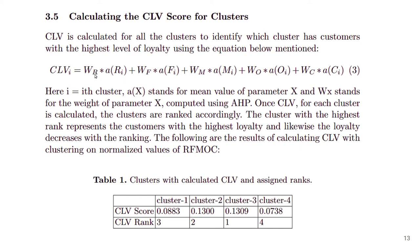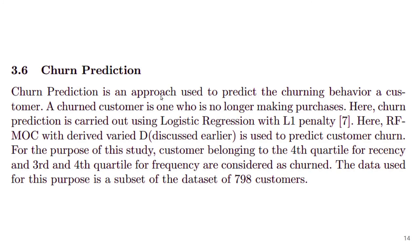The equation to calculate CLV is given as equation 3 on this slide. The final phase is churn prediction. Churn prediction is used to predict the churning behavior of customers, where a churned customer is one who is no longer making purchases. Logistic regression was used for this purpose, with the model RFM OCD, which includes RFM OC plus the additional variable D. Customers considered churned were those belonging to the fourth quartile for Recency and the third and fourth quartiles for Frequency.